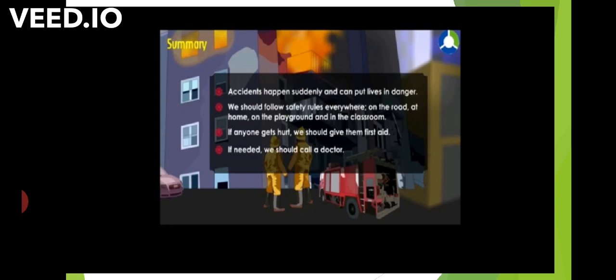Let's recall, accidents happen suddenly and can put lives in danger. We should follow safety rules everywhere on the road, at home, on the playground and in the classroom also. If anyone gets hurt, we should give them first aid. If needed, we should call a doctor.